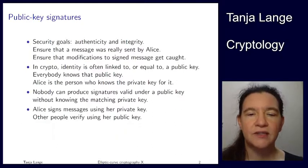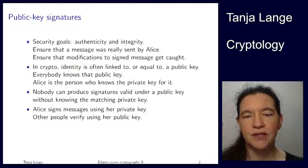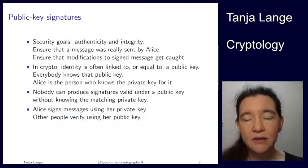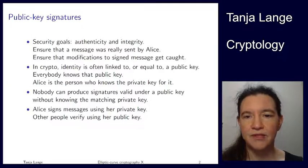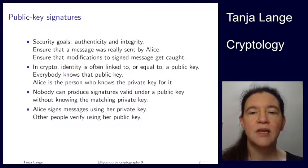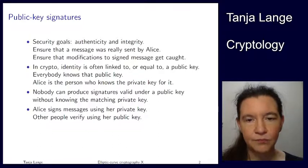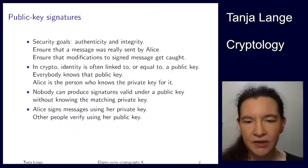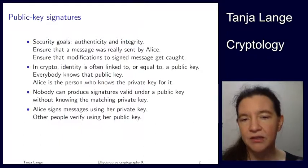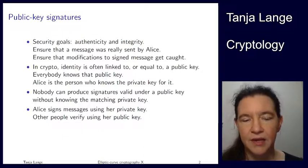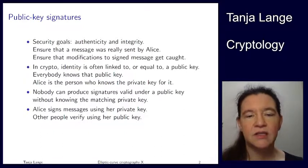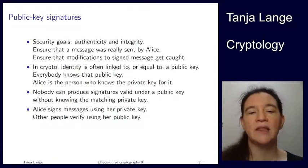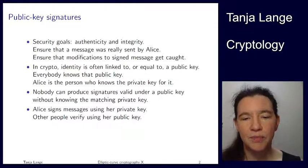What we want to achieve is that nobody else can produce signatures valid under this public key - so it was really me and nobody else. Of course, if I give my private key to somebody else, that person can impersonate me and sign. So identity is not linked to my physical person or passport - it is linked to the knowledge of the private key. If five people have the private key, you cannot distinguish between them. The data flow in signatures is that signing happens with a private key, and you verify the signature using the public key. This is a public key system.